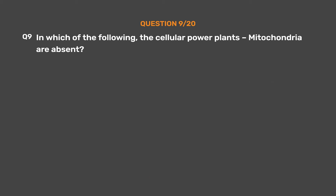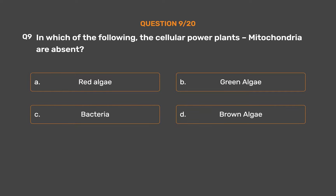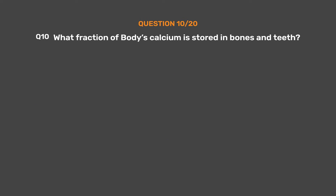Question No. 9. In which of the following, the cellular power plants, mitochondria are absent? Option A: Red algae. Option B: Green algae. Option C: Bacteria. Option D: Brown algae. The correct answer is Option C: Bacteria.